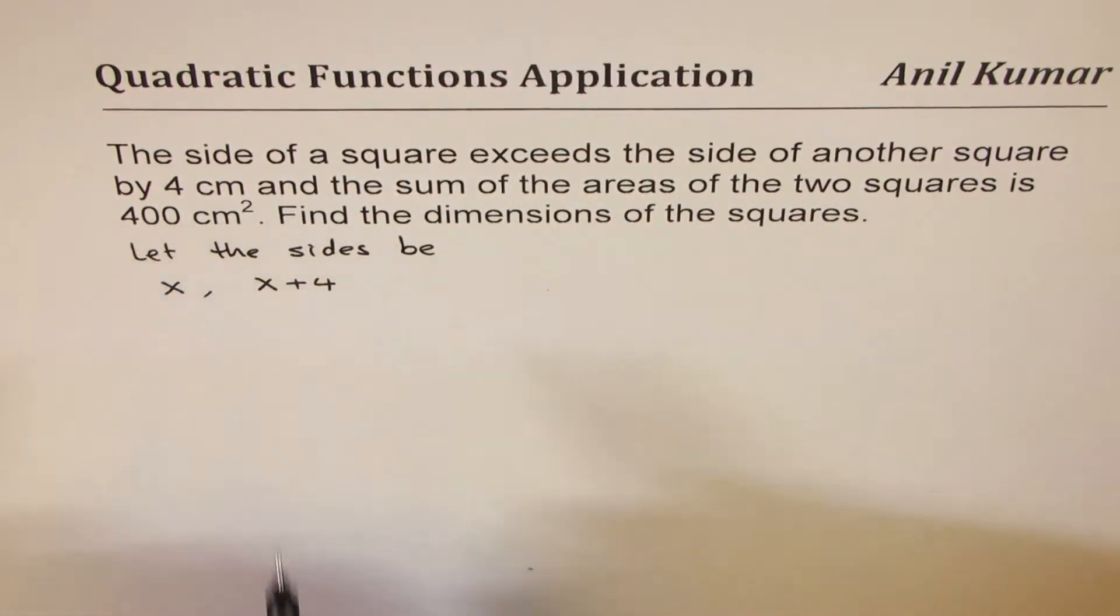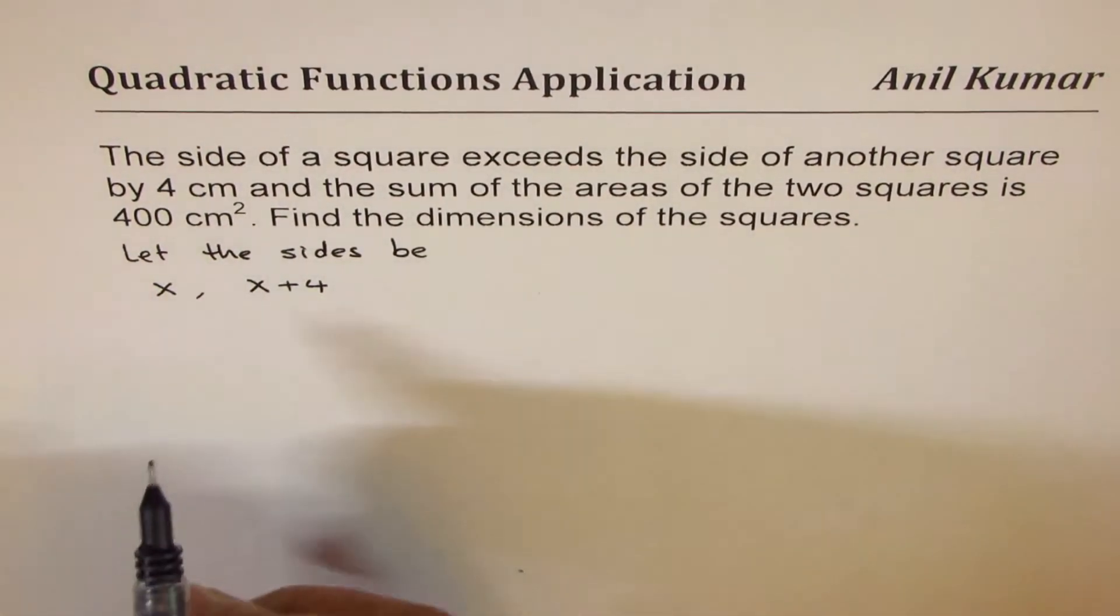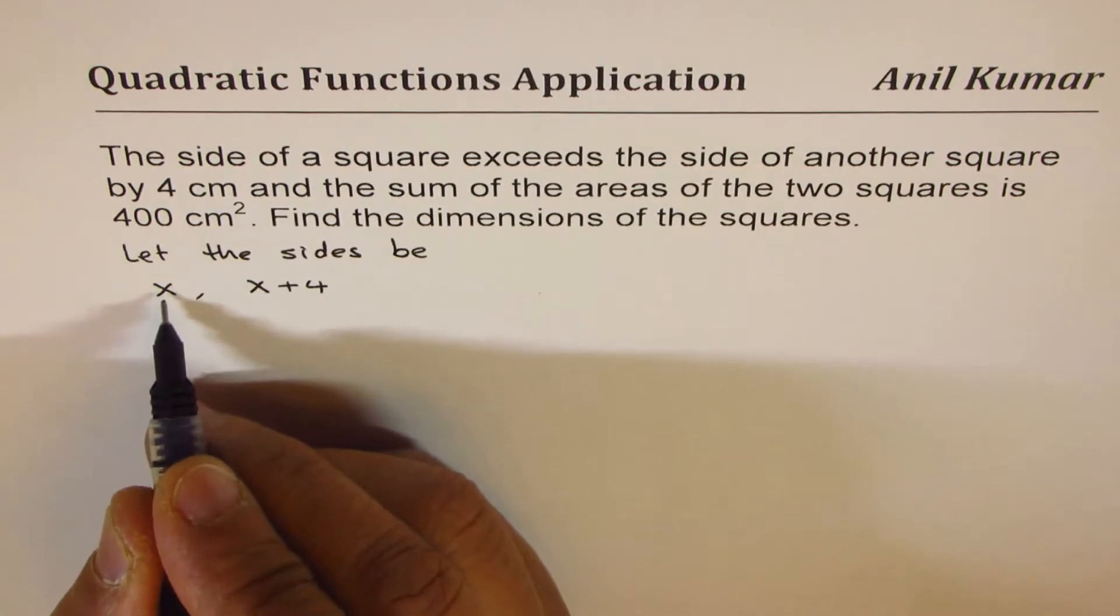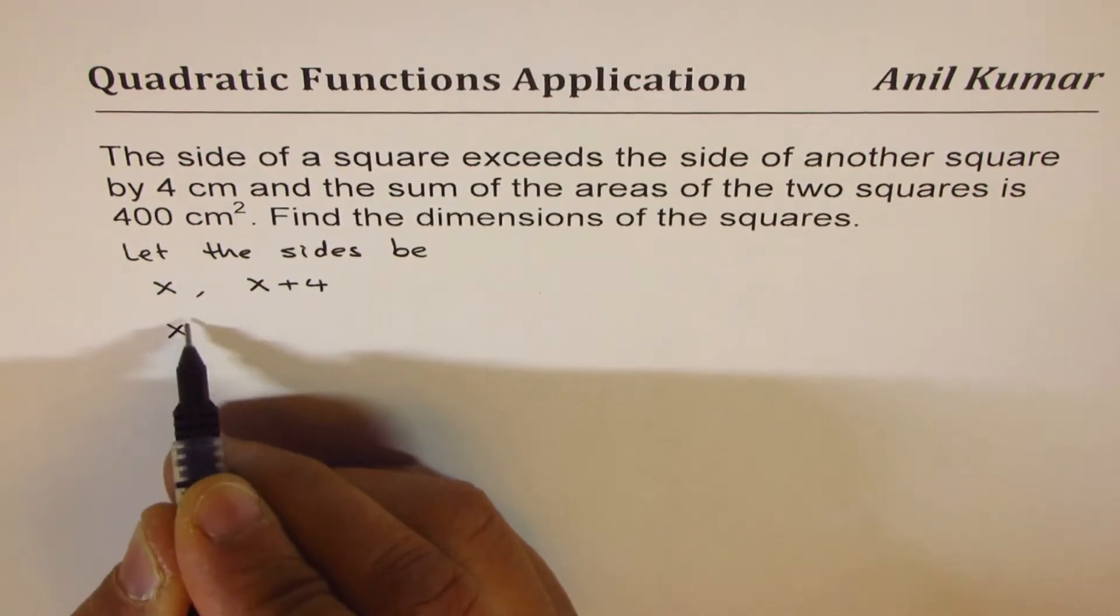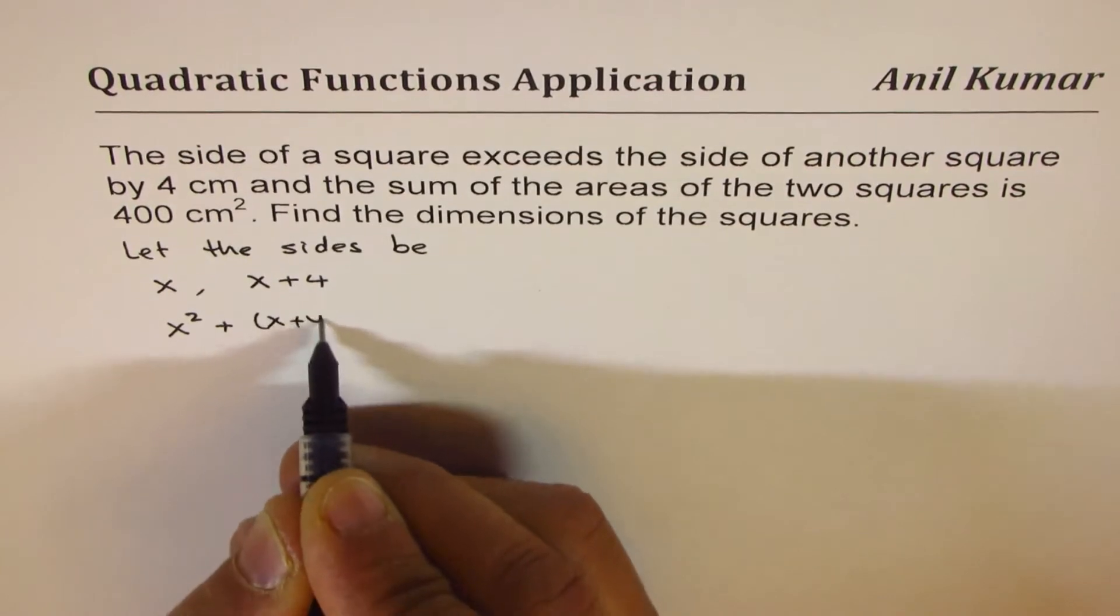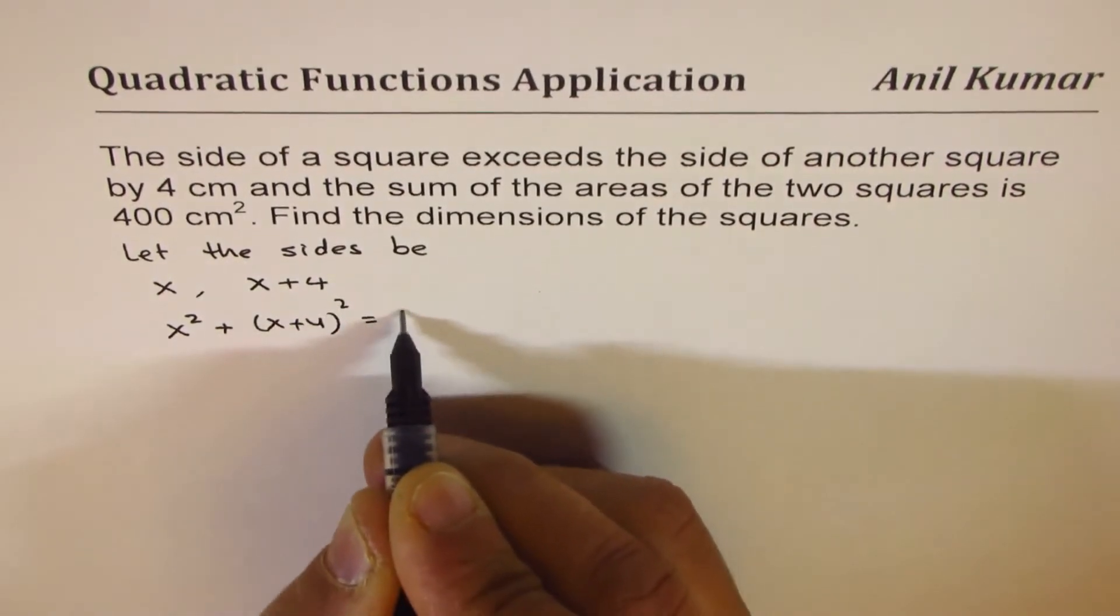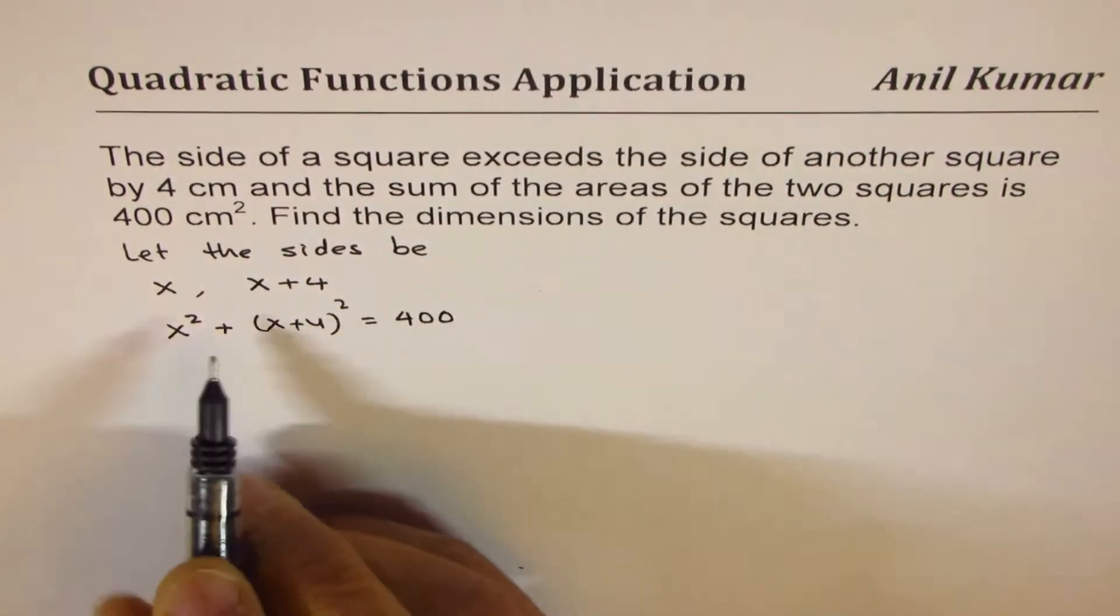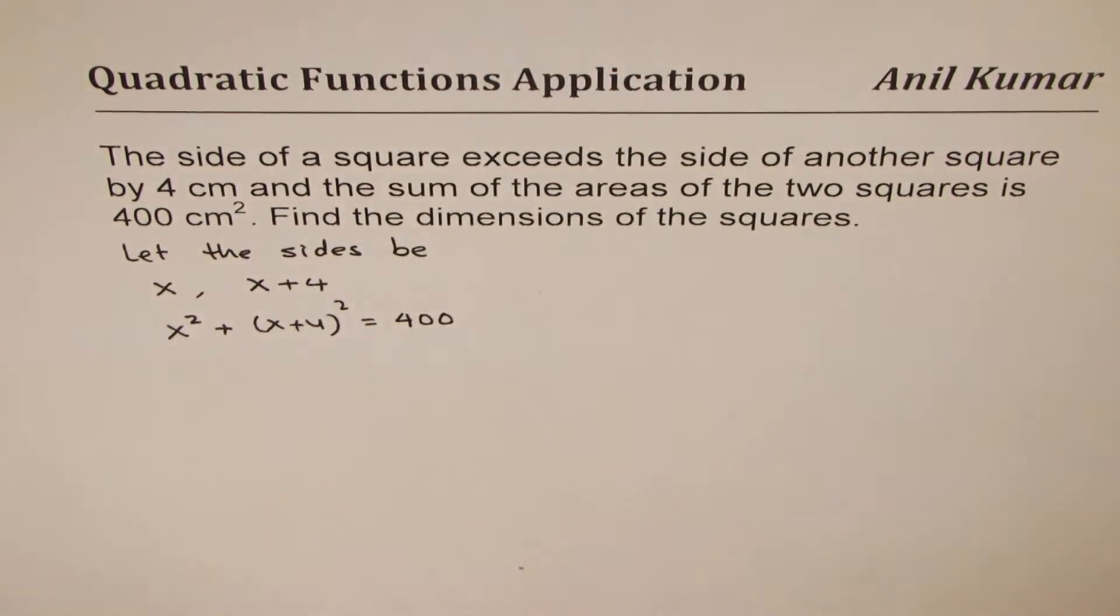Now it says that the sum of the areas of the two squares is 400. So sum of areas means area is side squared, right? So it is x² + (x+4)² = 400. That gives you an equation for the sum of the areas of those two squares.